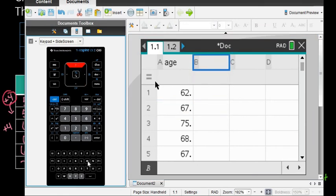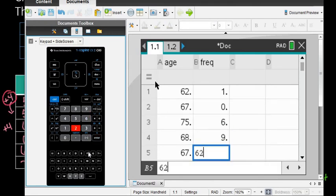I'll add my frequency into here. I have to add my frequencies to find the relative frequency. Don't hit enter—I just hit the down arrow. So 1, 0, 6, 9, 6, and 2.